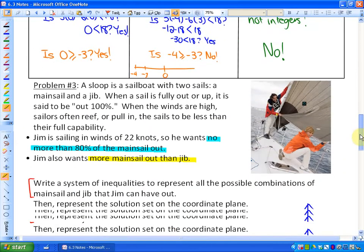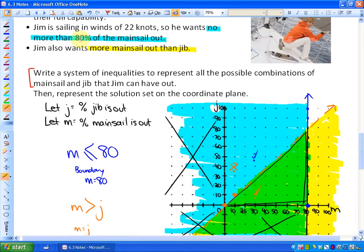We also looked at an example with mainsail and jib, where there's no more than 80% of mainsail out, and there's also more mainsail out than jib, and the solution region was this triangle here, where both of those constraints are satisfied. That's a solution region that represents all the possible combinations that would satisfy those constraints. We also looked at how to represent those as linear inequalities.